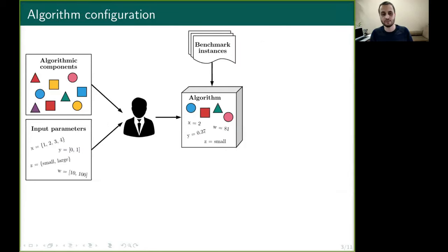The algorithm configuration problem is to search for good parameter settings which maximize the expected performance of the target algorithm on a set of benchmark instances.